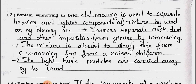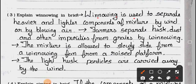Question 3: Explain winnowing in brief. Answer: Winnowing is used to separate heavier and lighter components of a mixture by wind or by blowing air. Farmers separate husks, dust, and other impurities from grains by winnowing. The mixture is allowed to slowly slide from a winnowing fan from a raised platform. The light husk particles are carried away by the wind.